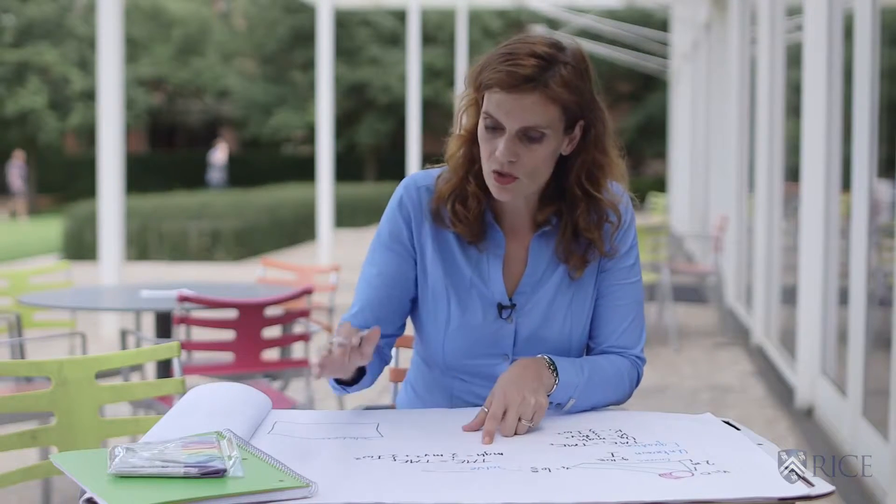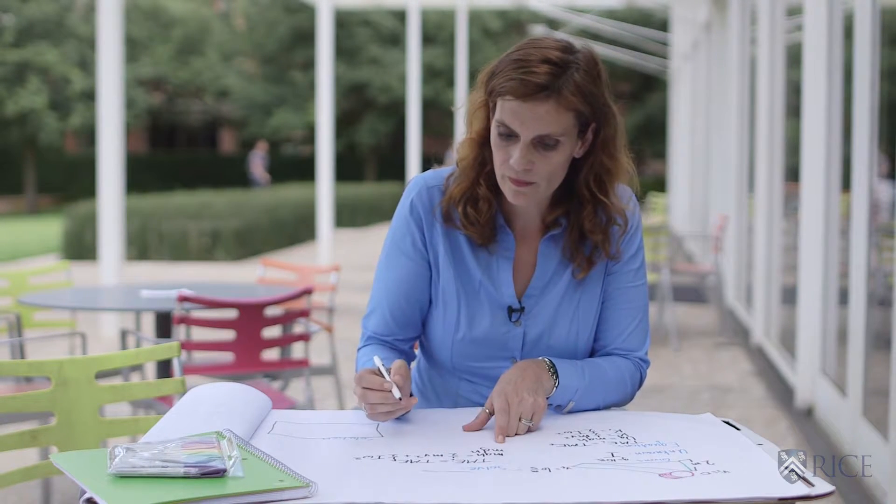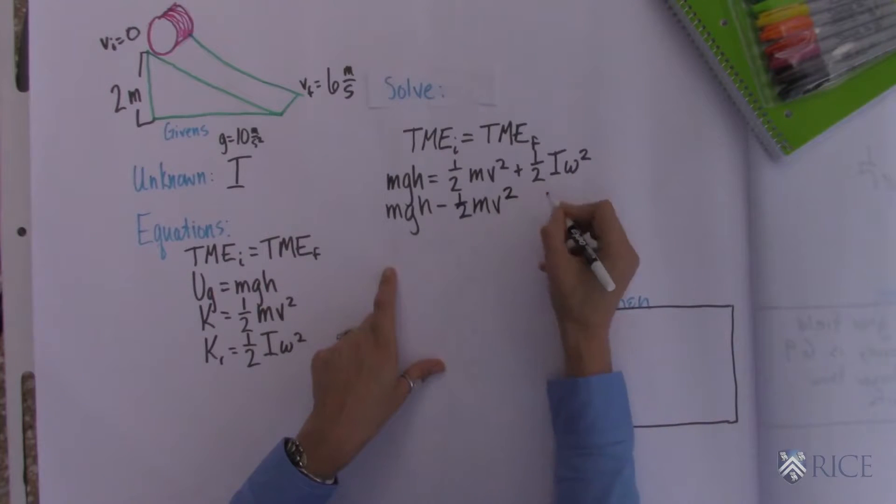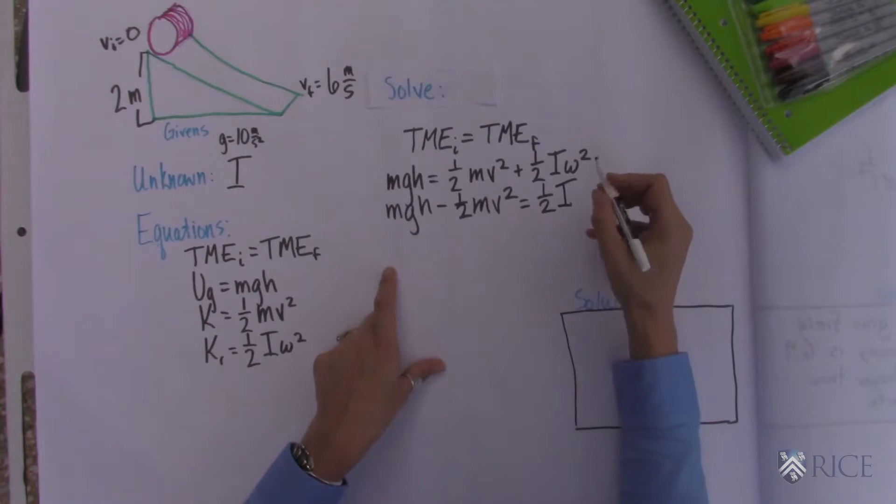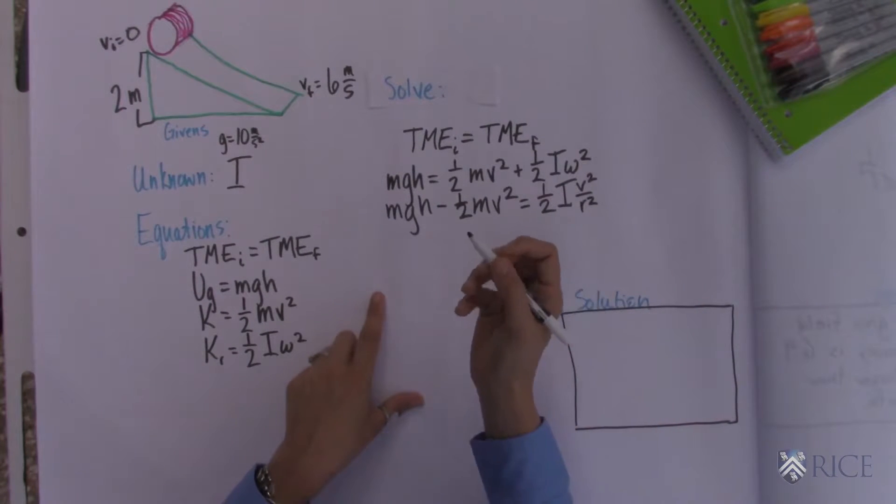Let's solve some things here. mgh minus 1 half mv squared equals 1 half i v squared over r squared. We can plug some things in, cancel some things. We know g is 10. Height is 2.